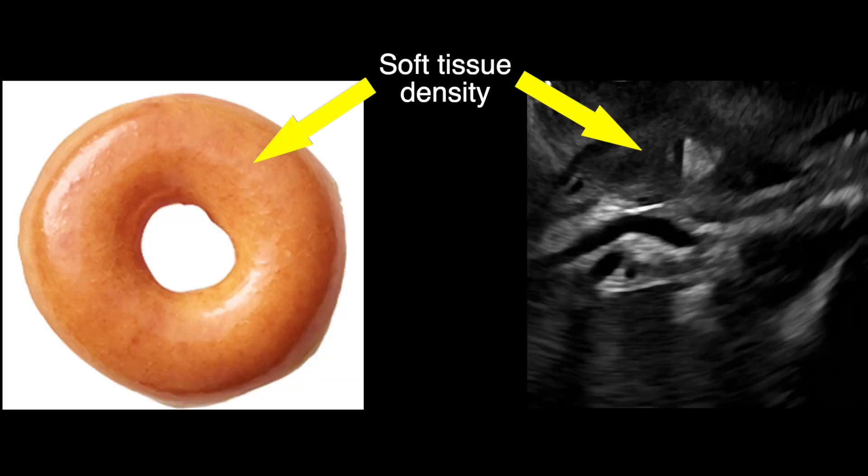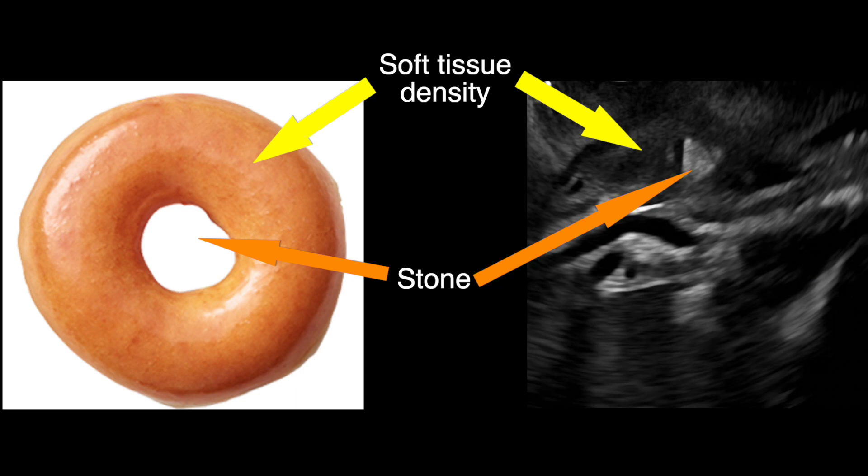Visualisation of a soft tissue density surrounding a stone in the bile duct is often construed as an inflammatory process. Herein we present three cases in which this assumption was proven to be incorrect.